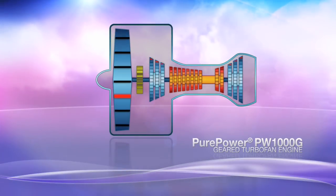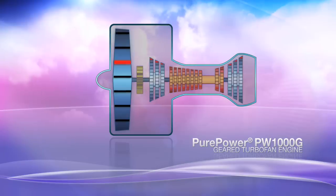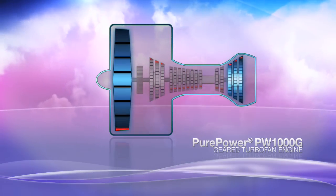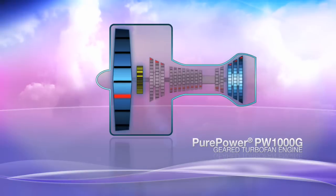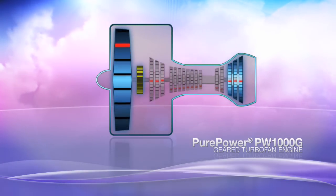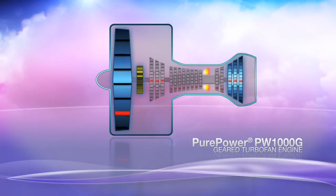the PW1000G engine varies the speeds of the fan and turbines with a highly efficient gearbox. A simple idea that allows these modules to operate at optimal speed and efficiency.